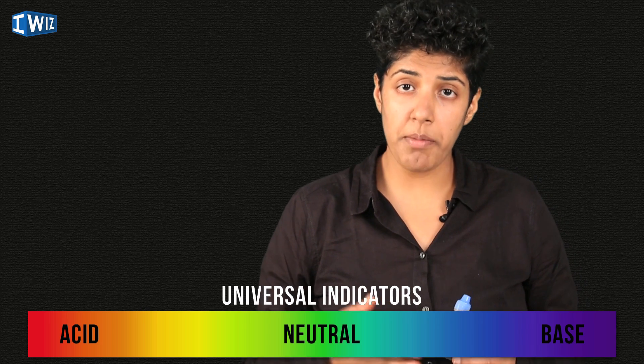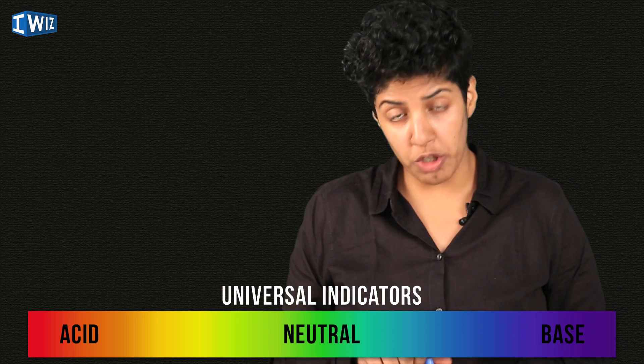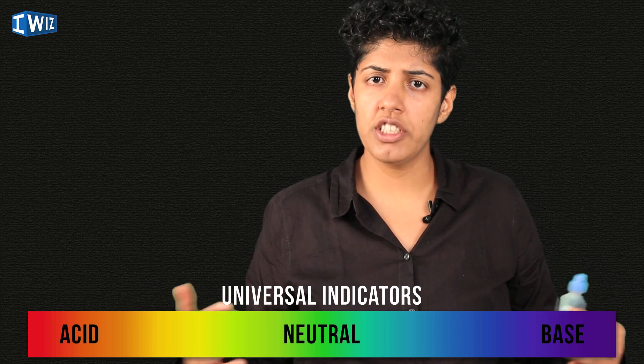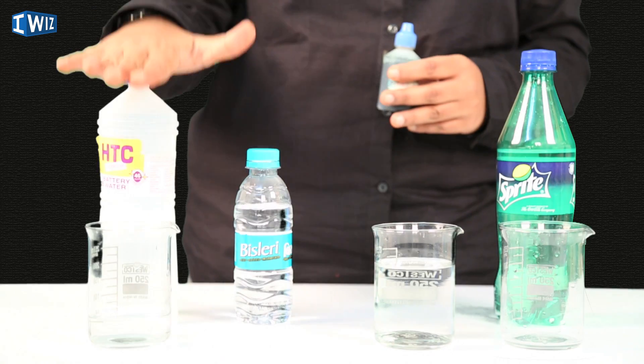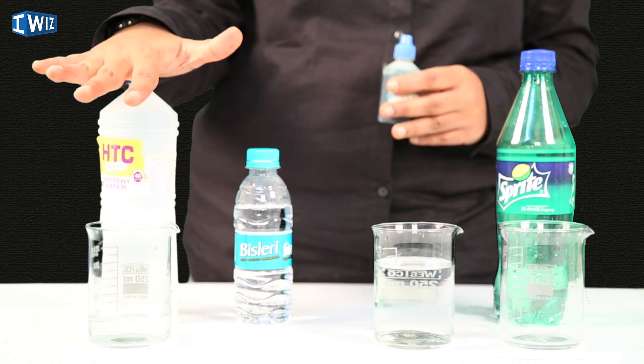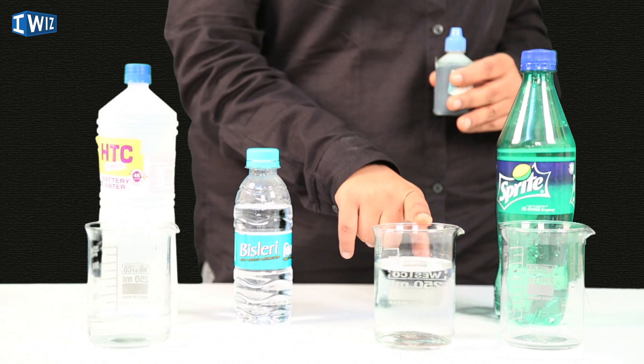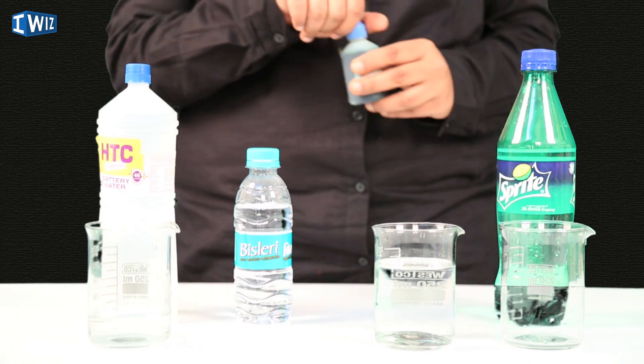Let's talk about the importance of pH. The universal indicator helps determine the pH of a particular solution. We're going to test a wide range of things, starting with water. I have four different sorts of water: distilled or deionized and demineralized water, mineral water, water from a swimming pool — which you may know has chlorine added — and carbonated water.